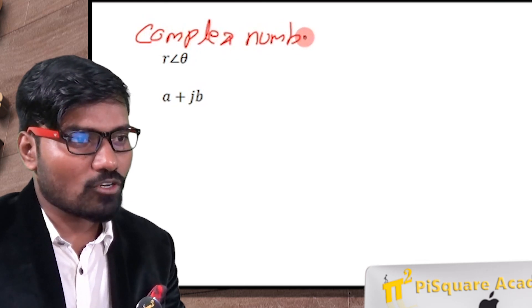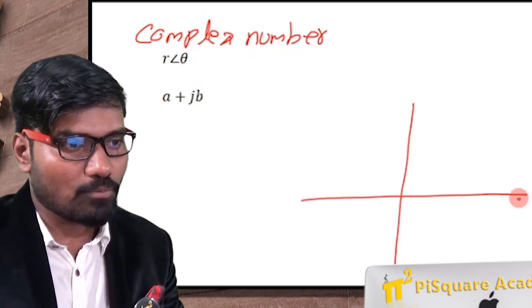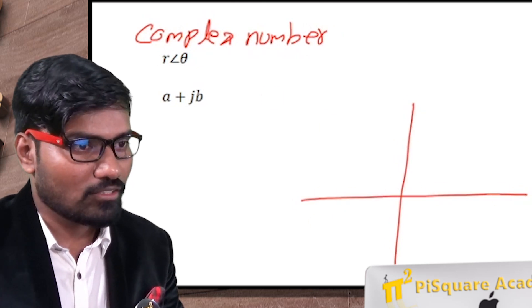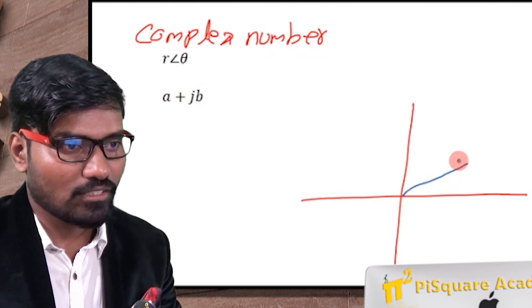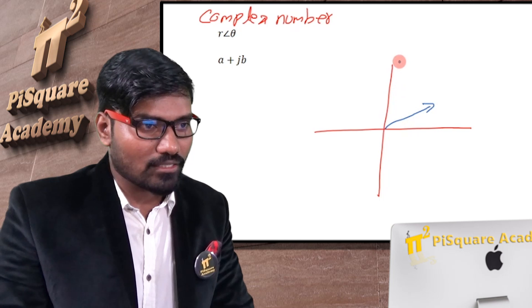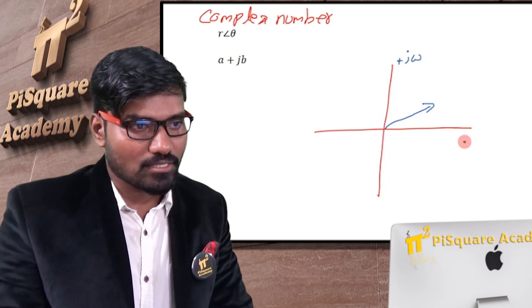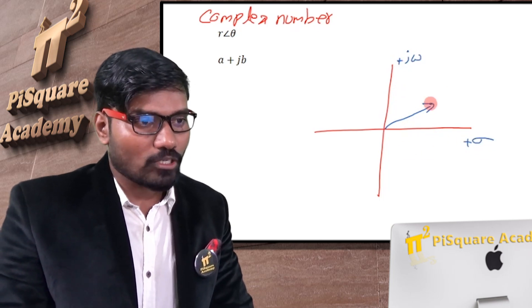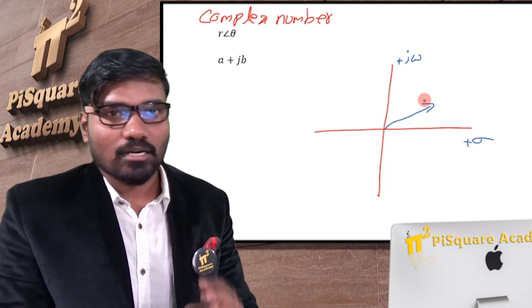So what is this complex number? In a complex plane, suppose if I want to mention vector, there is a vector here or phasor you can call. So to represent this line in a complex plane, this is plus j omega and this is plus sigma. To represent this line in the complex plane, I can represent it two ways.